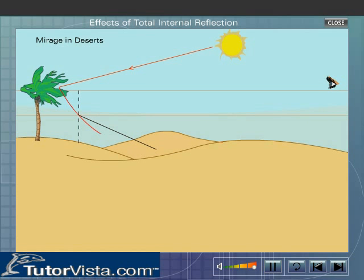at a certain layer, the ray is incident at an angle greater than the critical angle of the air with respect to the next layer of air.